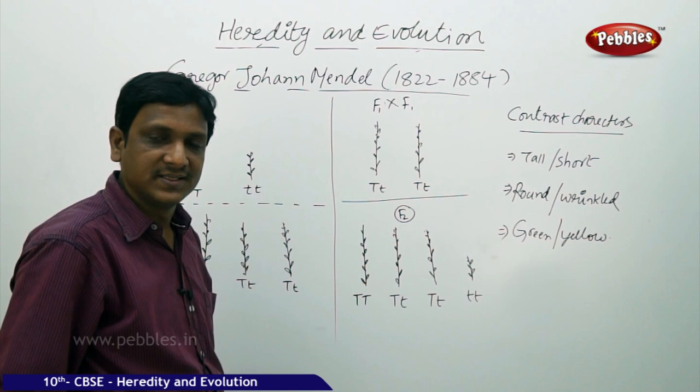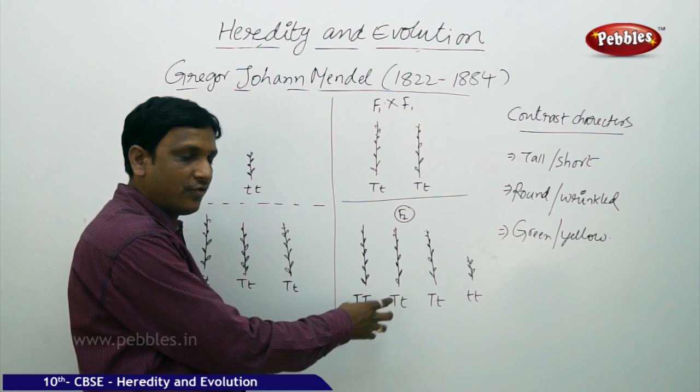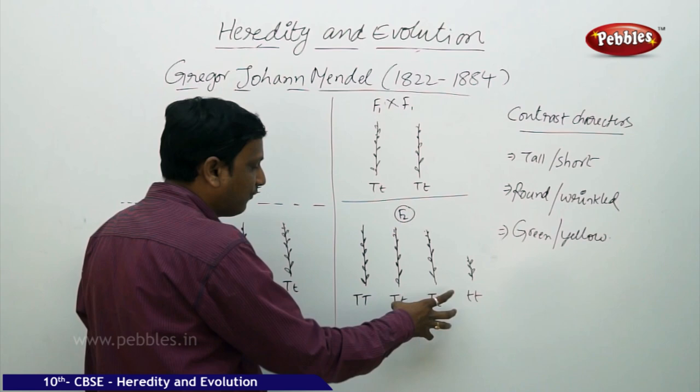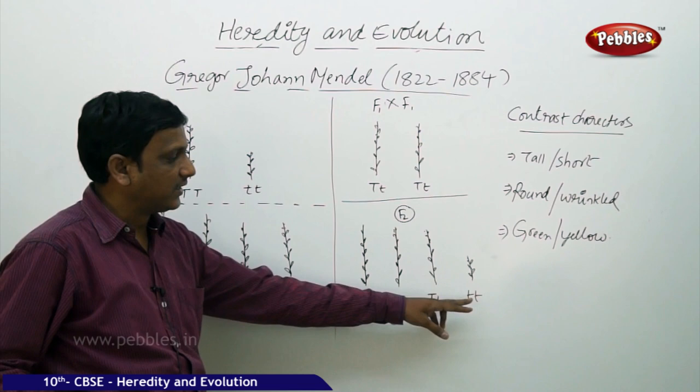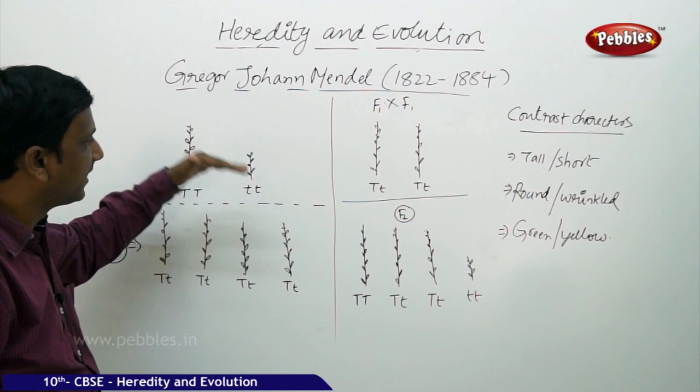In the second generation, 25% have completely dominant genes, 25% have completely recessive traits, and 50% have a mix of one dominant and one recessive gene. But to look from outside, three out of four are tall and one is short. This is how the inheritance of variations takes place.